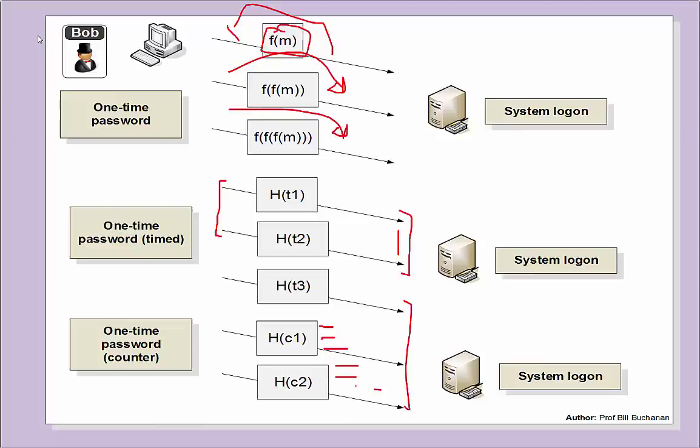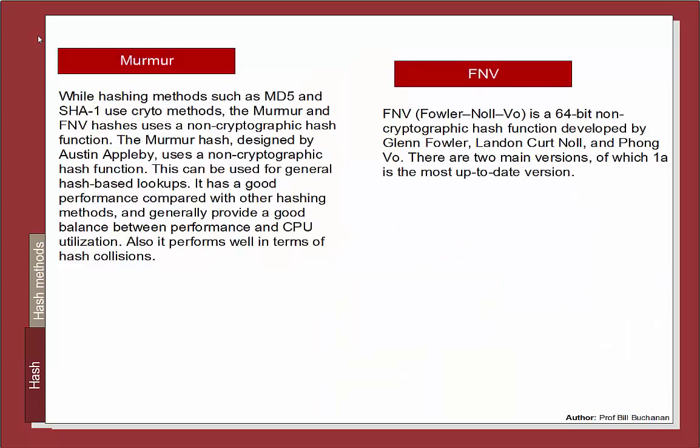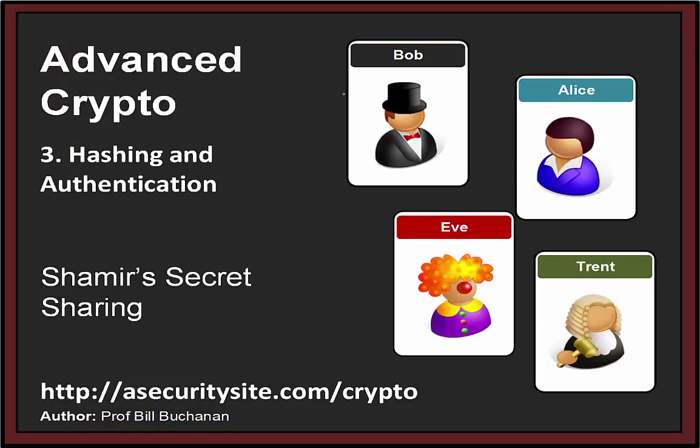The last concept is FNV and Murmur. FNV and Murmur are hashing codes that don't involve cryptography, so they can be used on fairly simple types of devices.